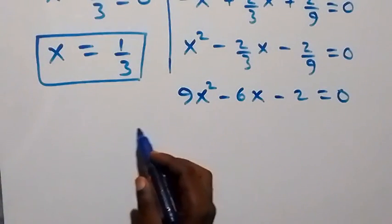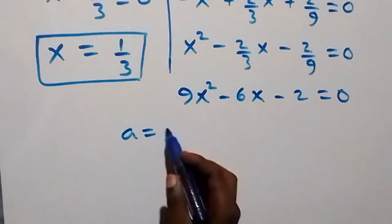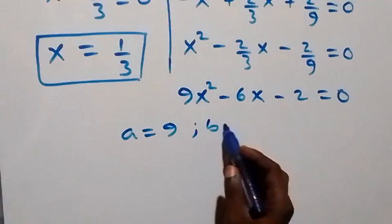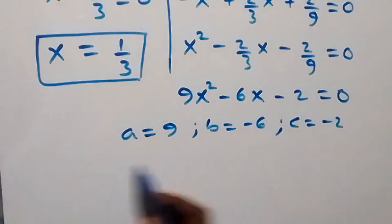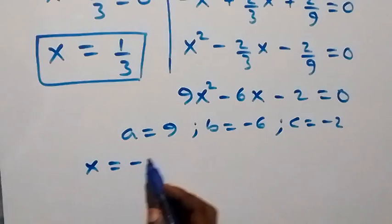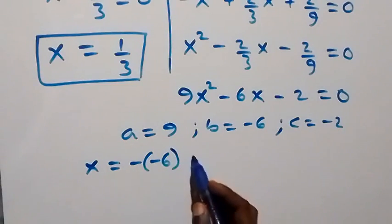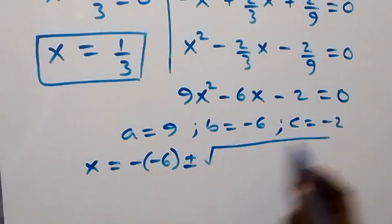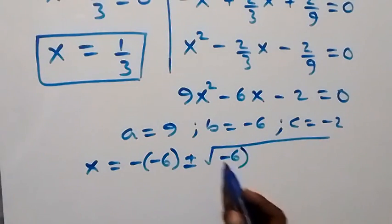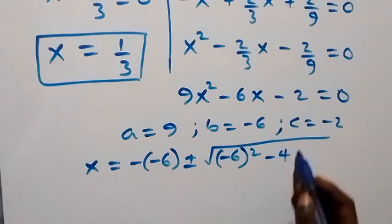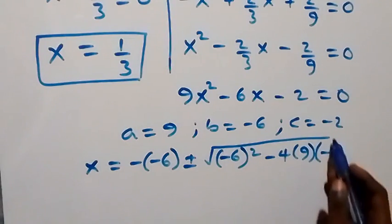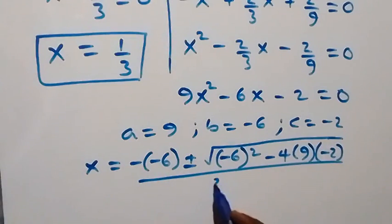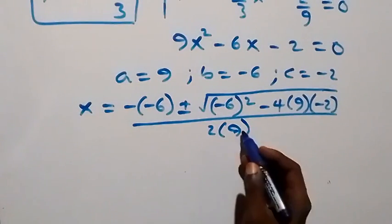Comparing with the quadratic equation, we have a equals 9, b equals minus 6, and c equals minus 2. From here, x equals minus b, that is minus(−6), plus or minus square root of b squared minus 4ac, all over 2a, that's over 2 times 9.